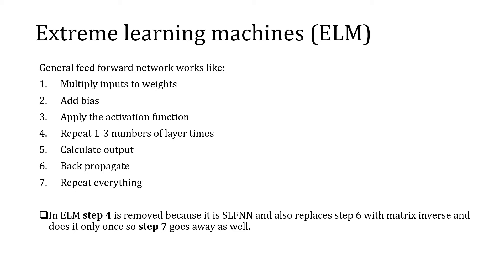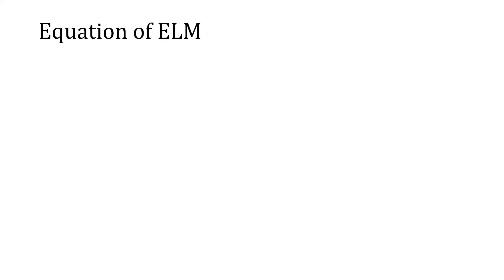Once this is done, instead of having backpropagation as in the feedforward neural network, the ELM model tries to create an inverse matrix so that it gets the results near to the desired output. Since it is a single layer, it does not repeat itself again because it is not backpropagating anything. So steps four through seven are omitted.